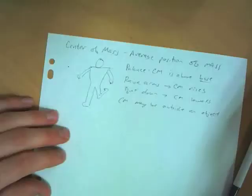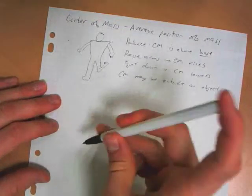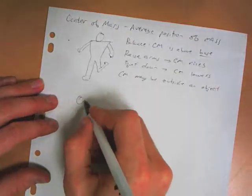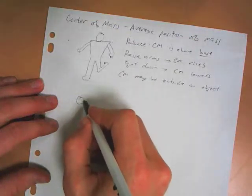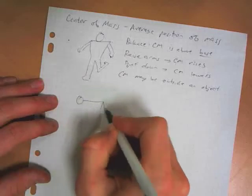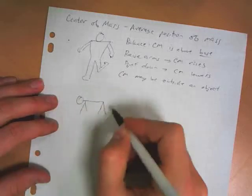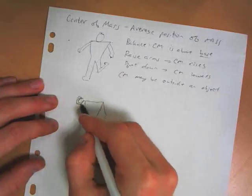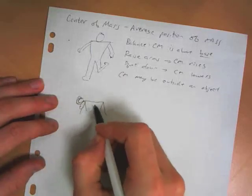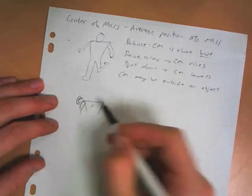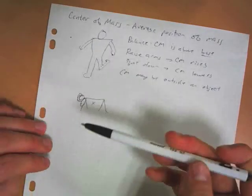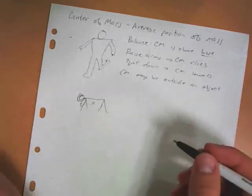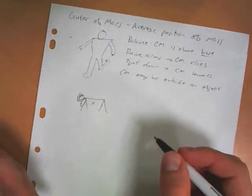If a person bends themselves over into the bear walk with your legs and arms straight, if you hang your head down, your center of mass might be over here outside of your body. So the center of mass doesn't have to be inside the object because it is just that average position.